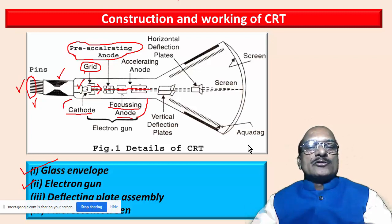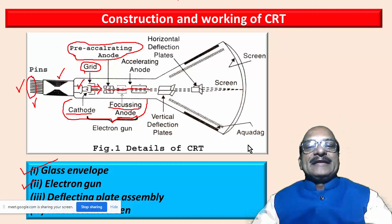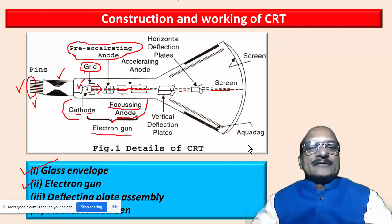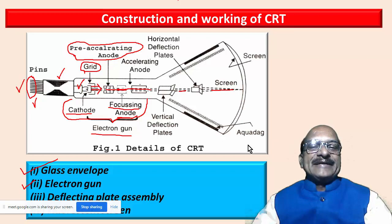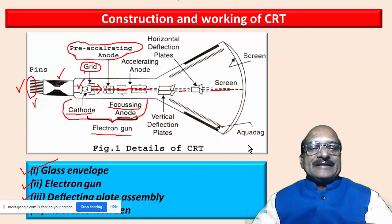The combination of these electrodes — filament, control grid, pre-accelerating anode, focusing anode, and accelerating anode — is called the electron gun. The main function of this electron gun is to provide a well-defined, intense beam of electrons that travels with high kinetic energy towards the screen.